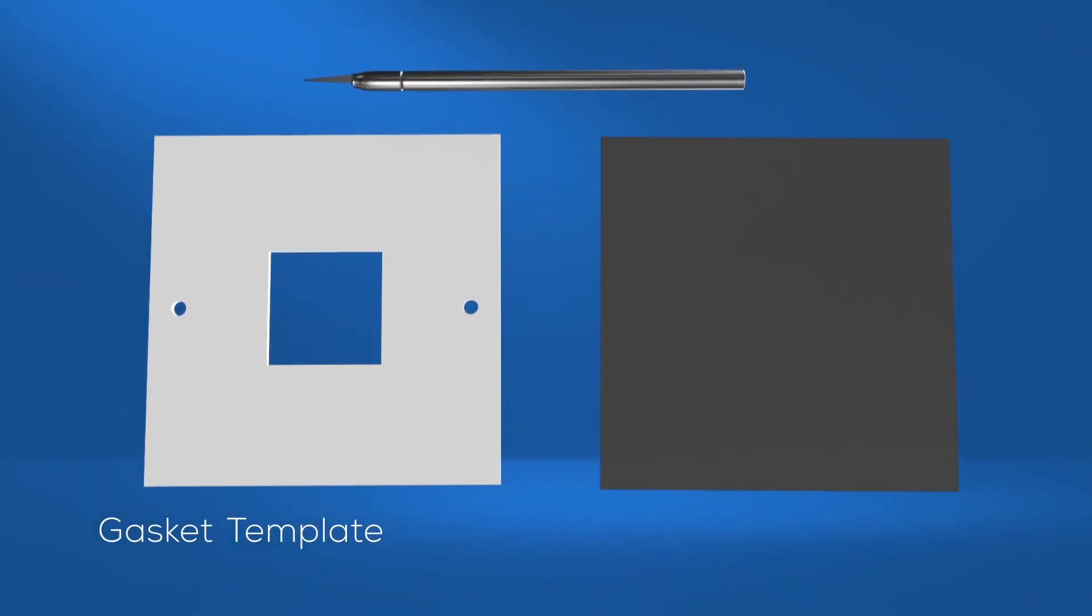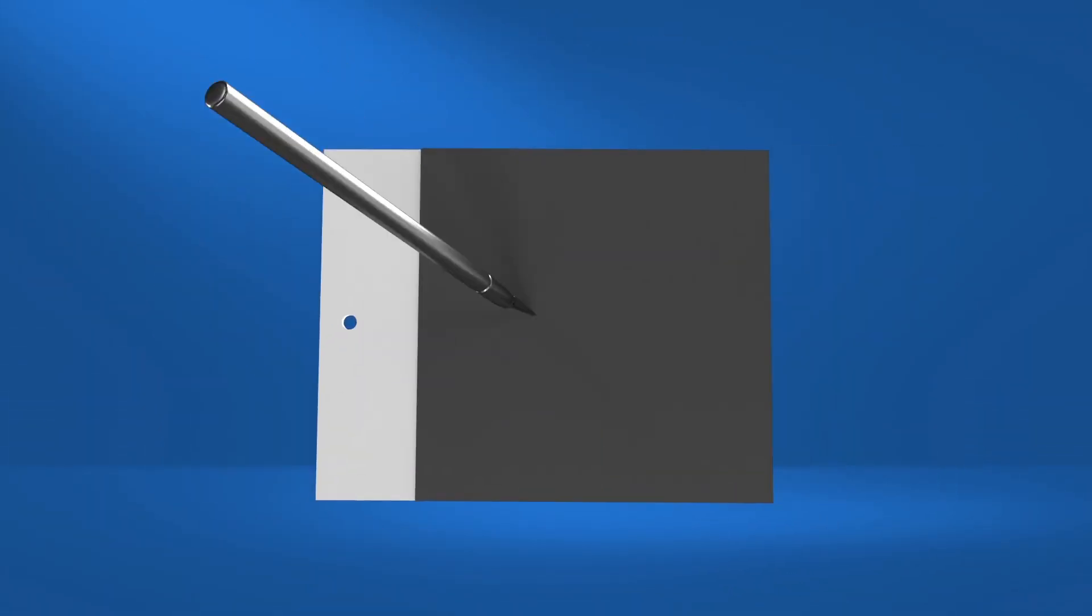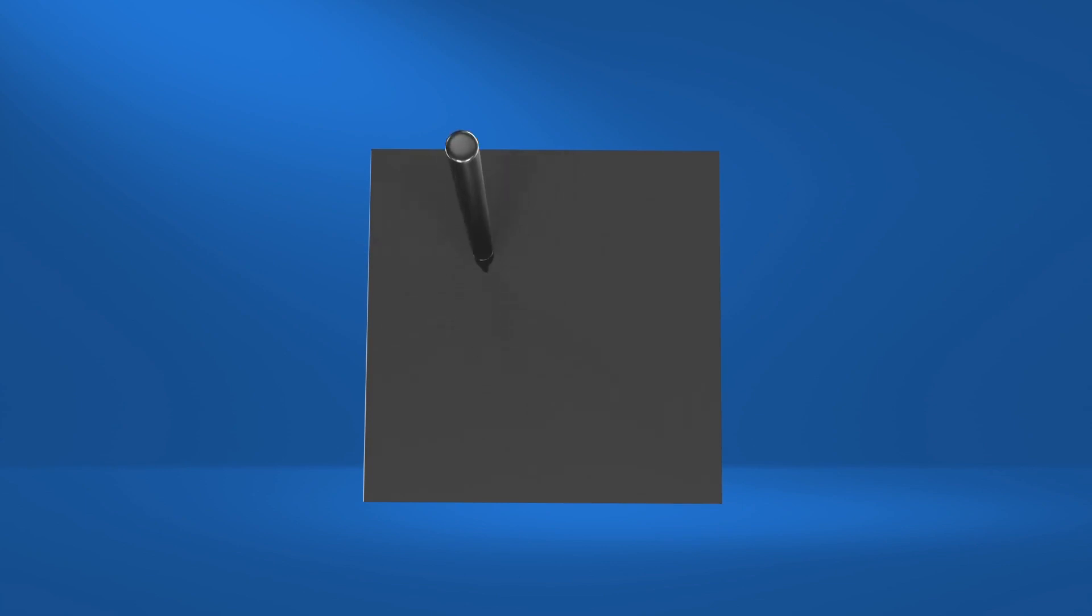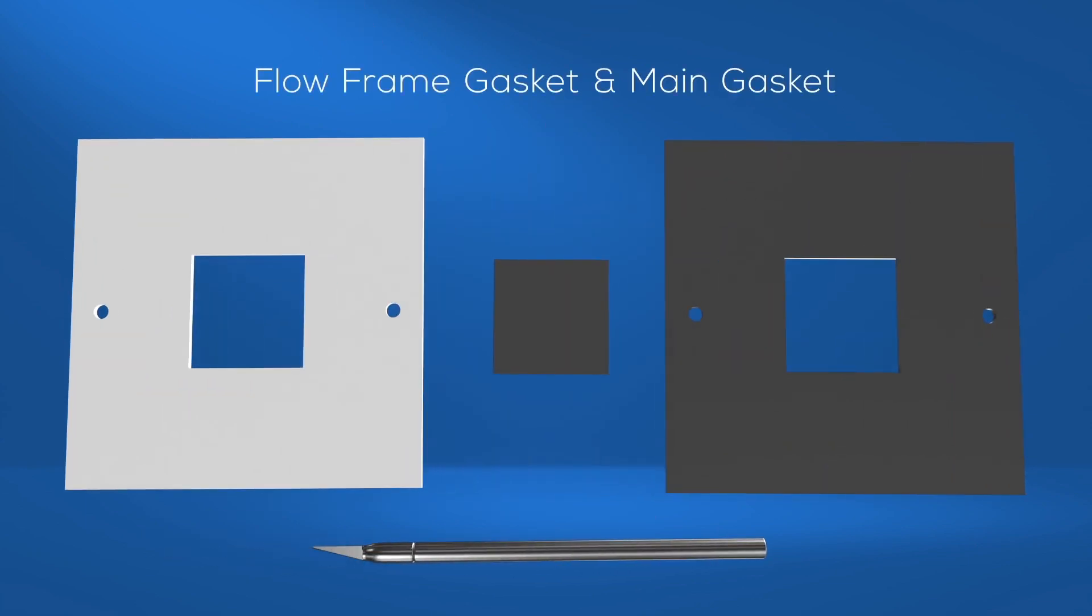To assemble the redox flow cell, the first step is to prepare the gaskets, electrodes, and separator. Use the gasket templates to aid in cutting the gasket windows and alignment holes.